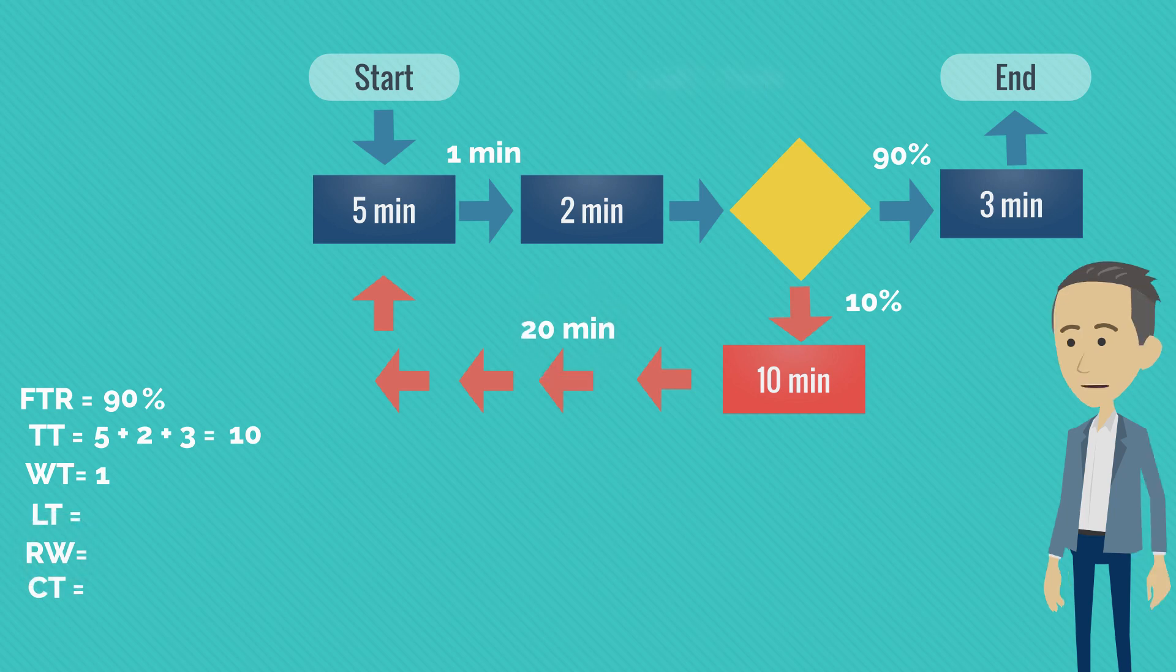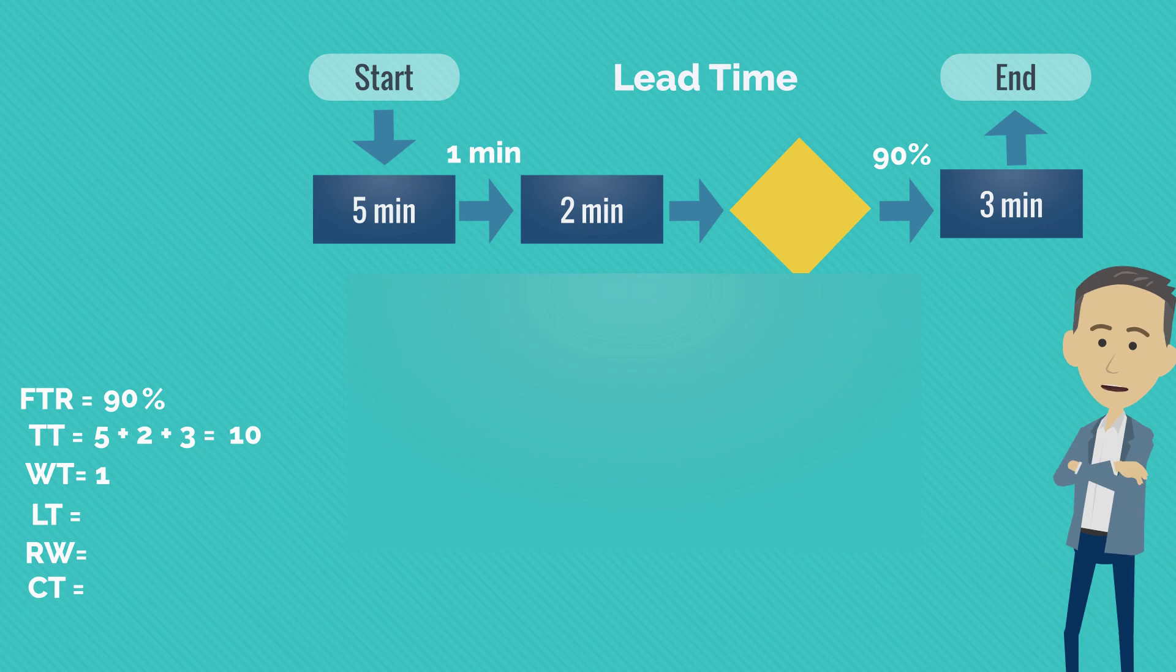Moving forward, lead time is a key metric of your process. It shows in how much time your units would go from start till end if there would be no errors. This metric is the sum between touch time and waiting time. So in our case, we see that customers can get 1 unit in only 11 minutes if we would have no rework.